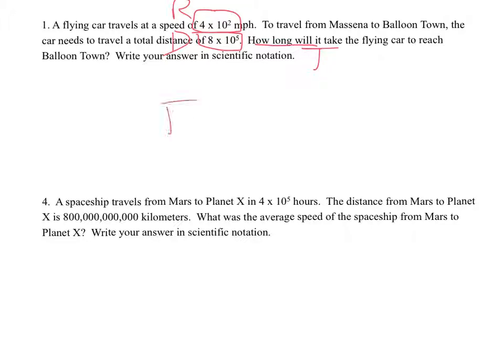Using the formula D equals R times T, let's fill in what we know. The distance is 8 times 10 to the 5th, the rate is 4 times 10 to the second power, and we're solving for time.